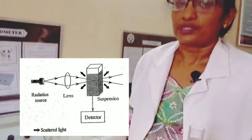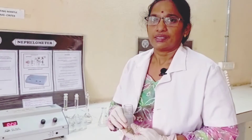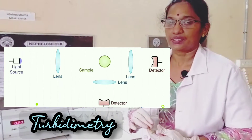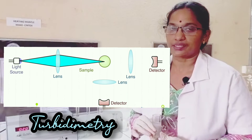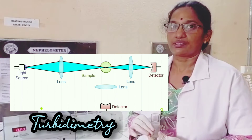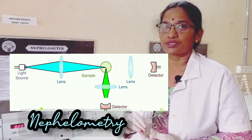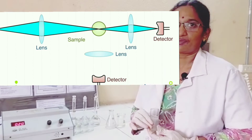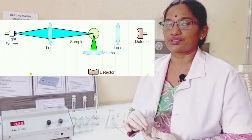Nephelometry is almost similar to turbidimetry, which is also a method where we can estimate turbid solutions. Turbidimetry measures the amount of transmitted light after passing electromagnetic radiation through the suspension. In nephelometry, we measure the scattered light — specifically, the intensity of the scattered light which is scattered by the suspended particles. Whereas in turbidimetry we measure the amount of light transmitted. This is the key difference between both methods, which are both used to measure suspensions and turbid solutions.